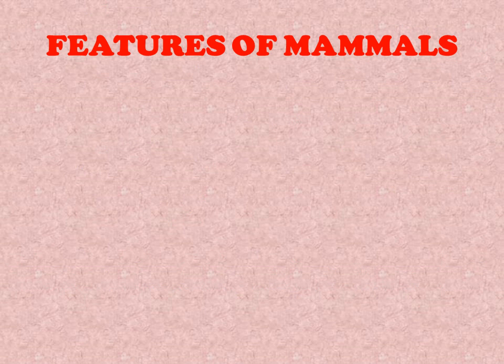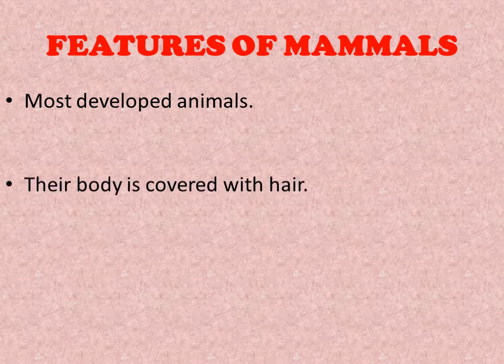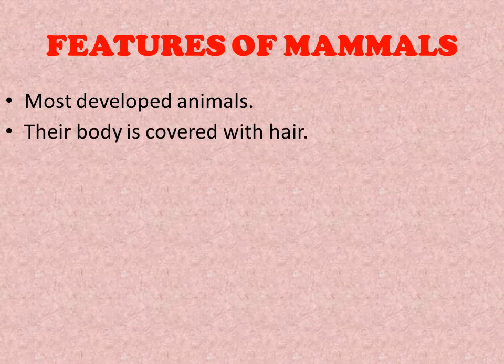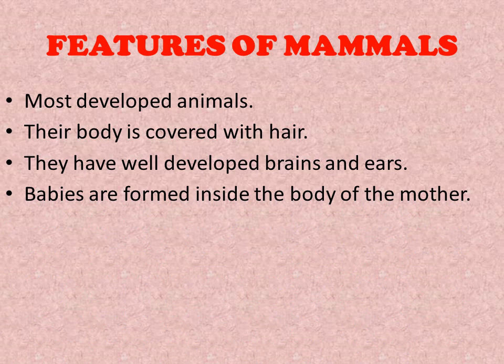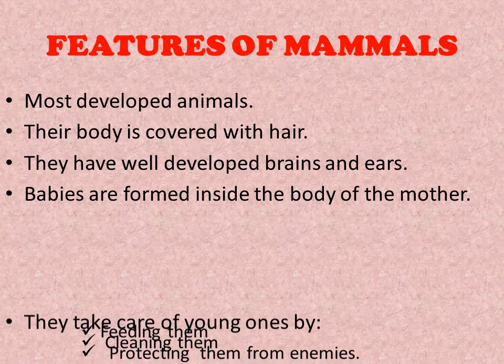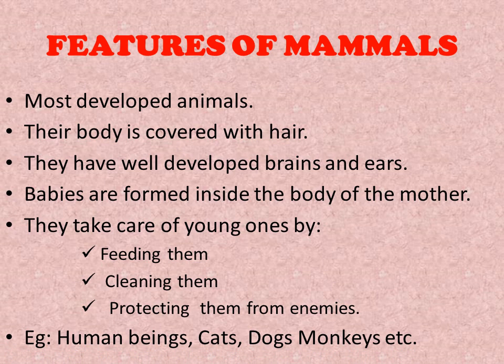Features of mammals: they are the most developed animals. Their body is covered with hair. They have well-developed brains and ears. Babies are formed inside the mother's body. They take care of the young ones by feeding them, cleaning them, and protecting them from enemies. Examples: human beings, cats, dogs, monkeys, etc.